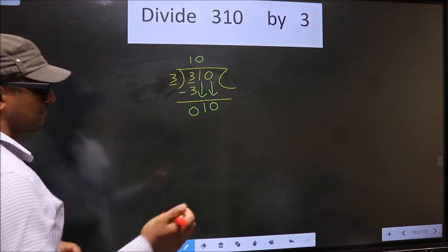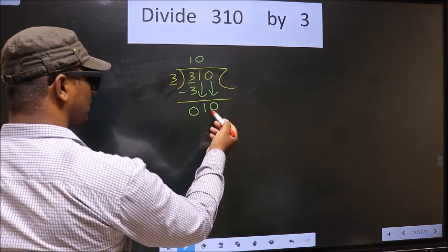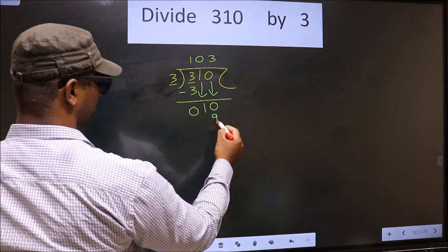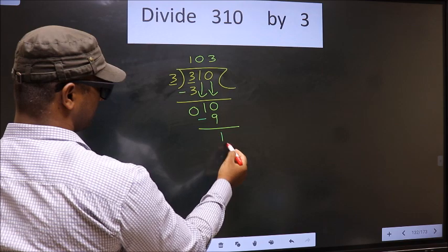Next, we have 10 here and 3 here. A number close to 10 in the 3 table is 3 threes, which is 9. Now subtract: 10 minus 9.